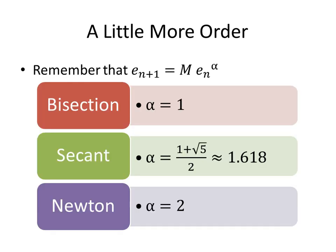Let's talk about order a little more. Notice that for bisection, alpha was 1; for Secant, alpha is about 1.618; and for Newton's method, the order is 2.